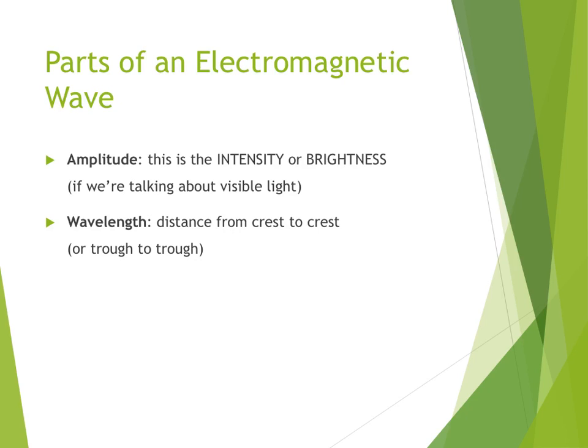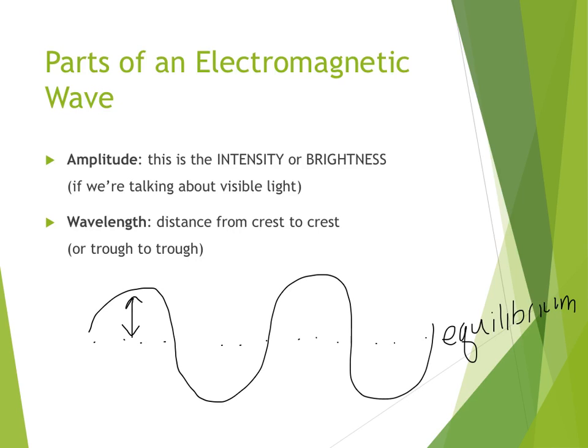There are two important parts of an electromagnetic wave that you need to know about. If we have our simplified version of our graph, and this is our equilibrium, we know that from equilibrium to the crest, or from equilibrium to the trough, that this is what's called the amplitude.